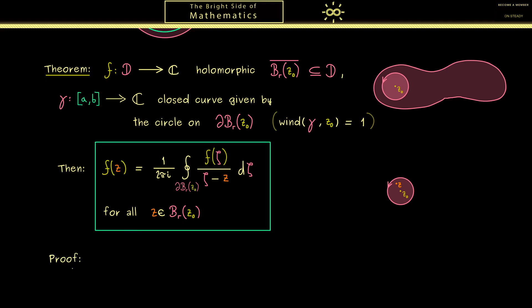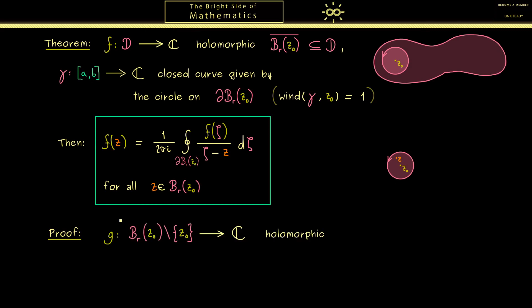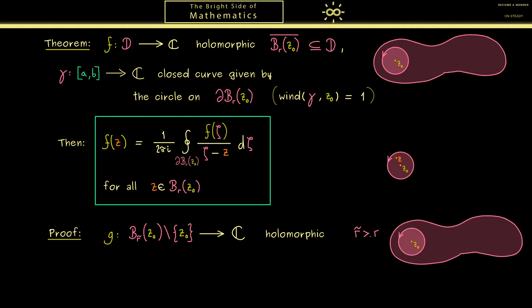And in fact, with the stuff we have already learned, we are able to prove it. The first thing we use is what we have learned in the last video. There a function g defined on the pointed disk played a crucial role. So you see, g should be a holomorphic function with one exception point. And now the only thing I want to change from the previous video here is that I want to call the radius r tilde. In fact, r tilde should just be a little bit bigger than r. And it should be chosen in such a way that the whole disk with radius r tilde still lies completely in D.